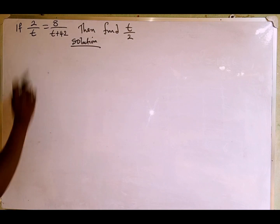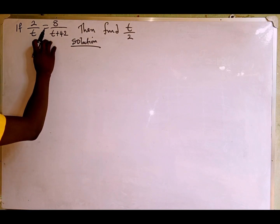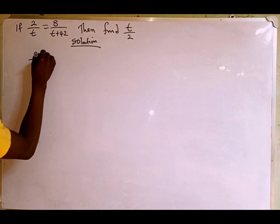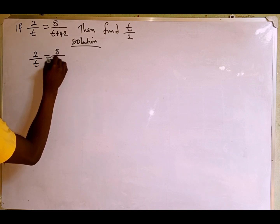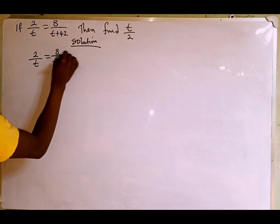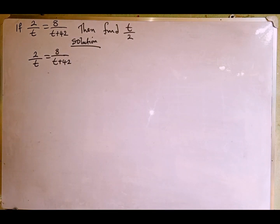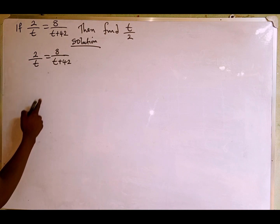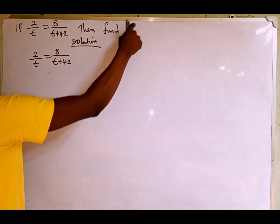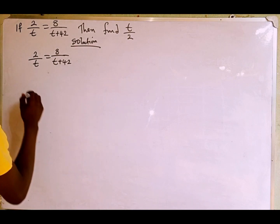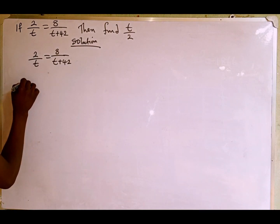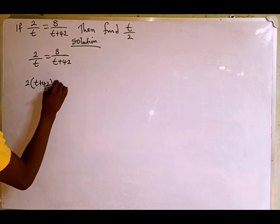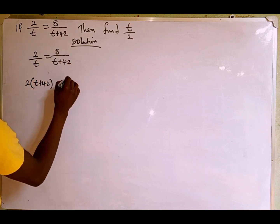Let's get started. The first thing we are going to do is solve for the value of t in this equation. The equation given is 2 over t which is equal to 8 over t plus 42. We are going to cross multiply — first find the value of t, then find t over 2. Cross multiplying gives us 2 multiplied by t plus 42, which is equal to 8 multiplied by t.